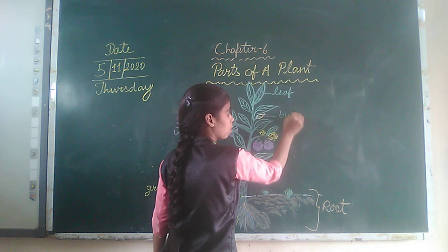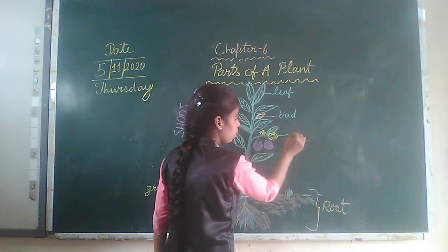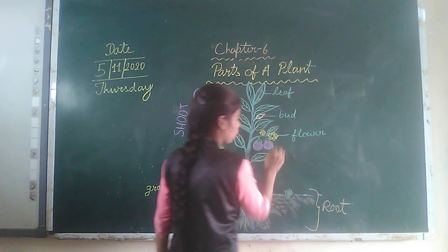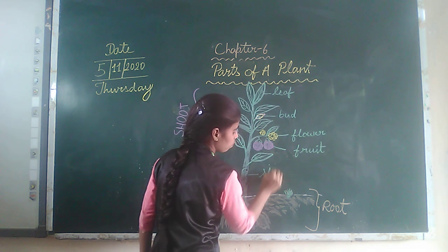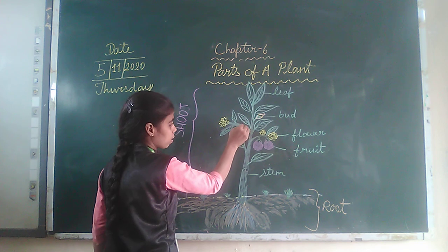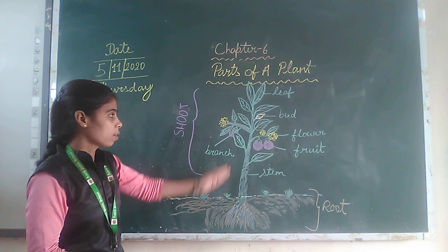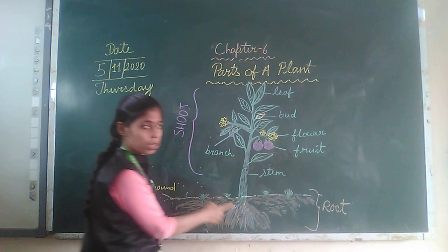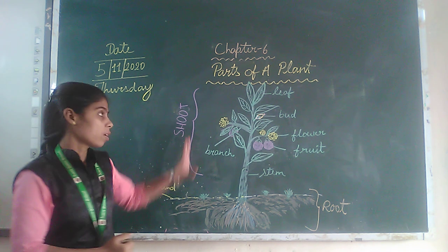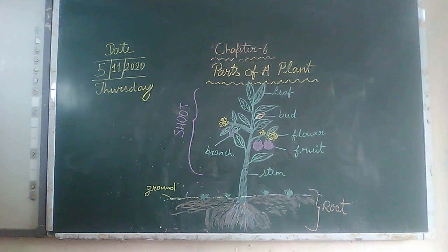Here you can see the bud. Here you can see the flower. Here is the fruit. Here is the stem. And here you can see the root. In this way, we have identified the parts of the plant.